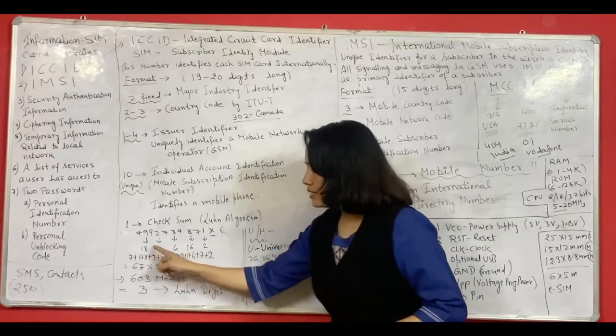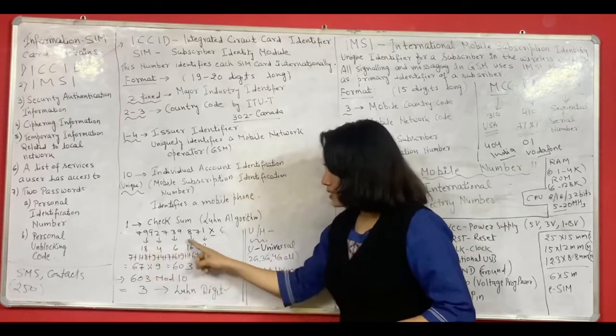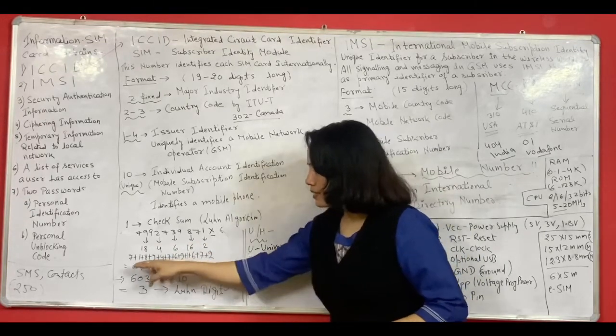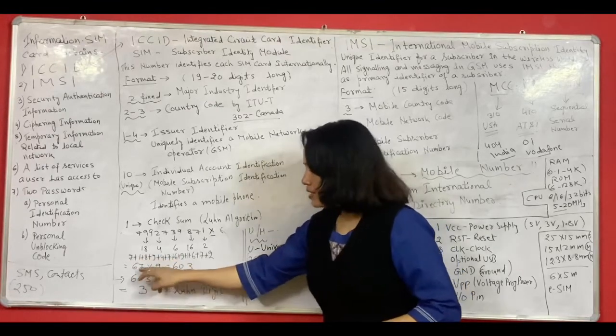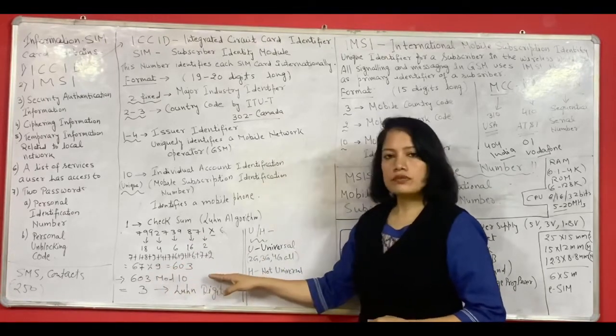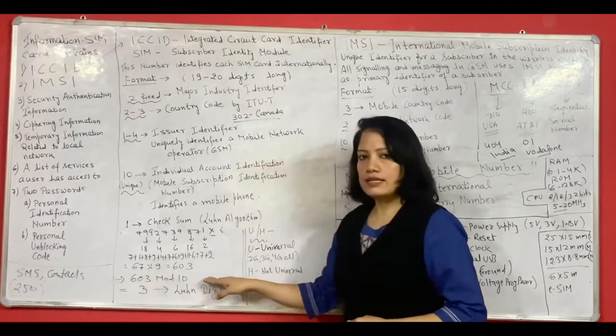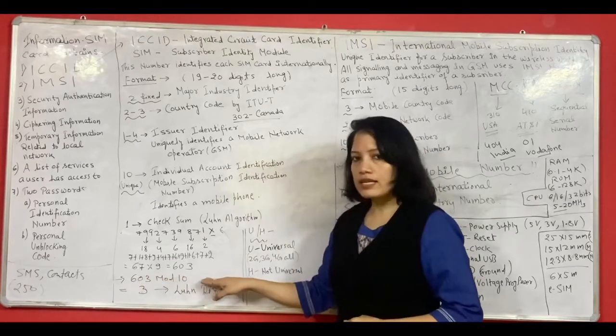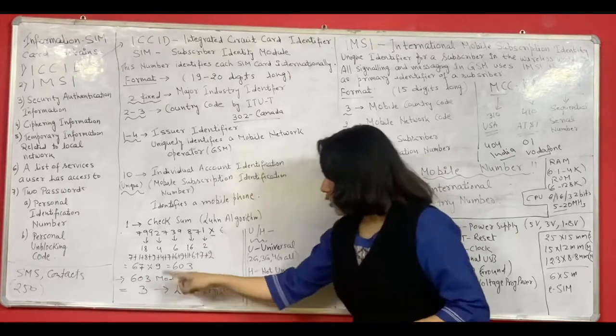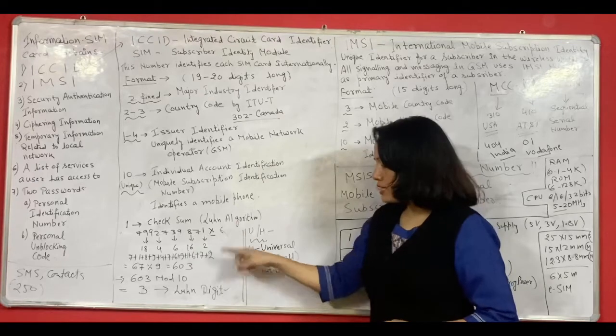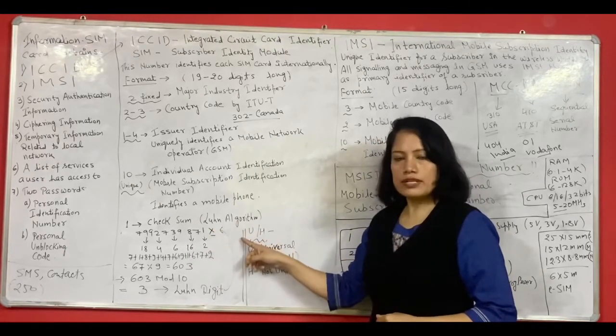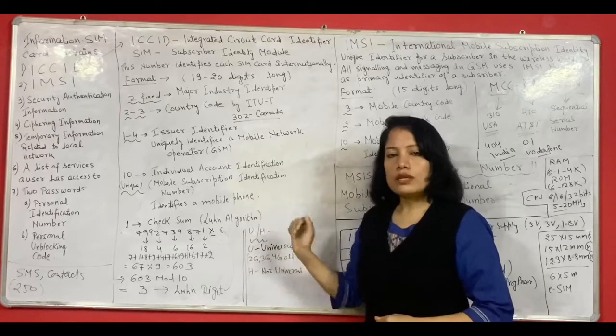Now then we have to add each of the digits. So if we have 18 then it will be added as 1 plus 8, 16 will be added as 1 plus 6. So in the next row we are adding the digits and the result would be 67. So now the next step is to multiply 67 by 9 and it will give 603. Now 603 modulus 10 it means that after dividing 603 by 10 we have to see the remainder which is 3 in this case. So 3 would now become your Luhn digit. So this way the checksum digit is decided based on Luhn's algorithm and this validates the whole number.